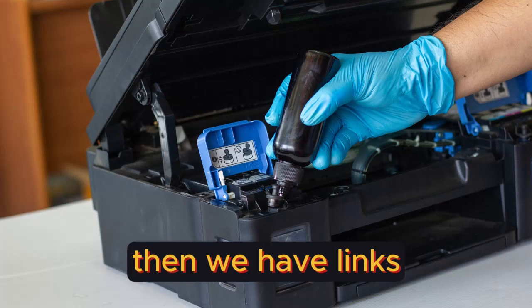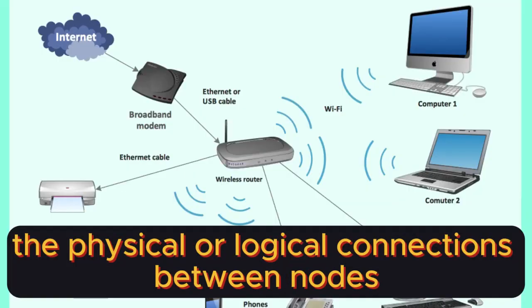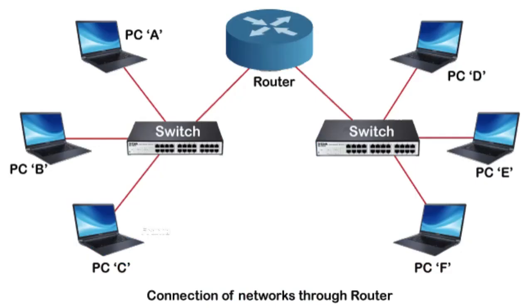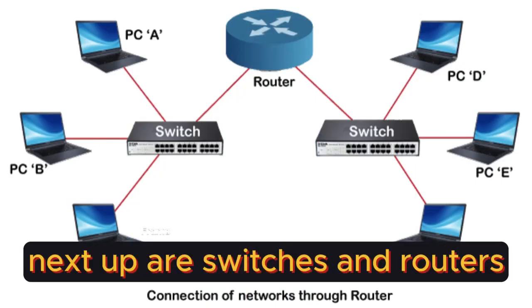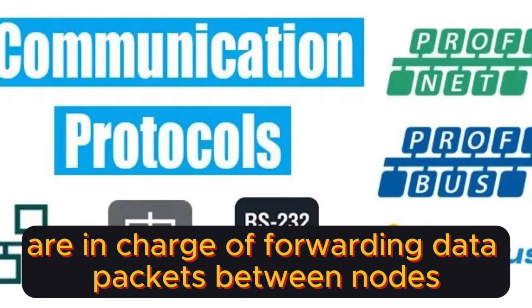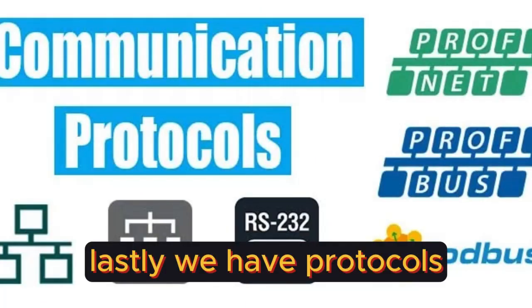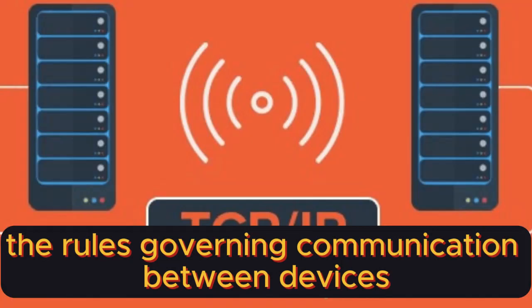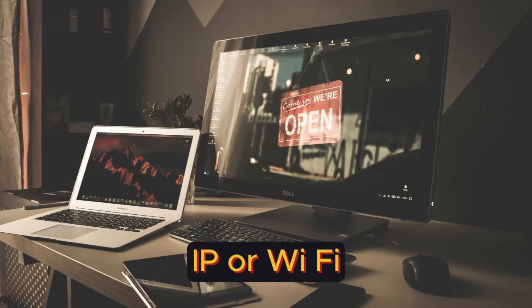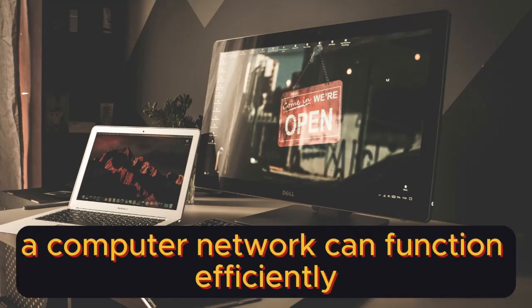Then we have links, the physical or logical connections between nodes, which could be wired or wireless. Next up are switches and routers — networking devices in charge of forwarding data packets between nodes. Lastly, we have protocols, the rules governing communication between devices. Think of TCP/IP or Wi-Fi. With these components in place, a computer network can function efficiently.